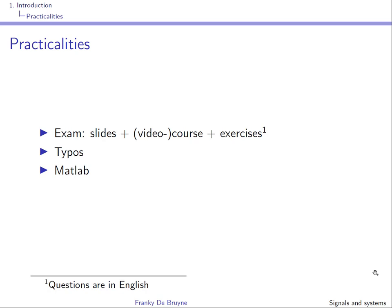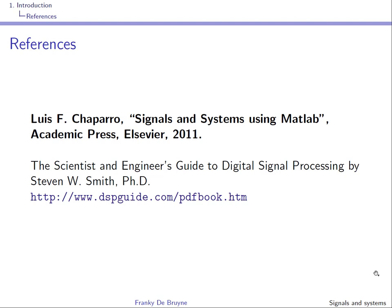If you find typos or mistakes, please send me an email — the goal is to improve the course. Suggestions for improvements are also welcome. You will find quite a bit of MATLAB code in this course, and I will also try to illustrate concepts using Python, which is increasingly used in industry. This course is mainly based on the reference 'Signals and Systems using MATLAB' by Luis Chaparro. A complementary reading is 'The Scientist and Engineer's Guide to Digital Signal Processing' by Stephen Smith.